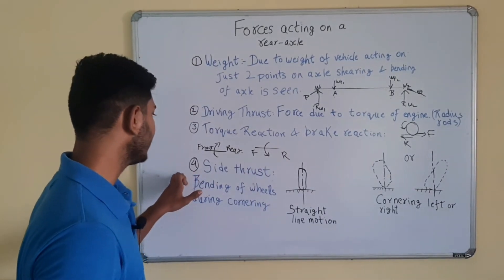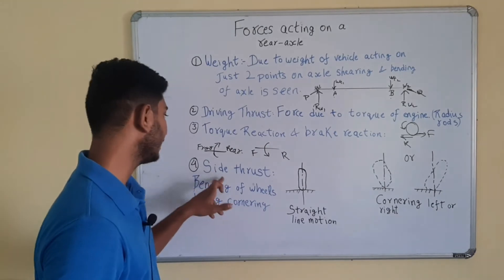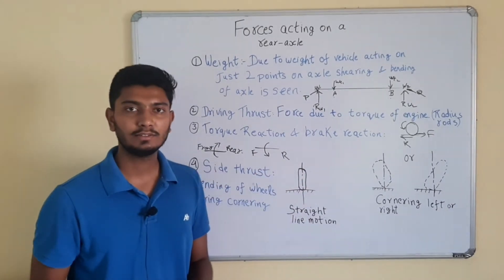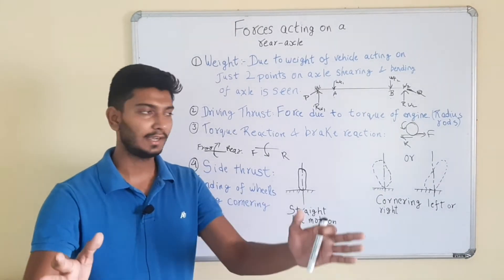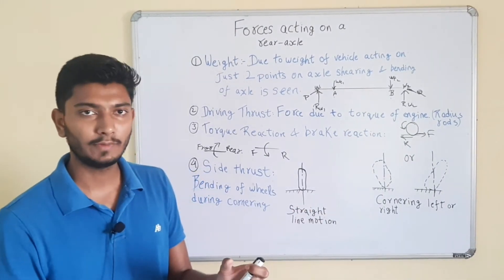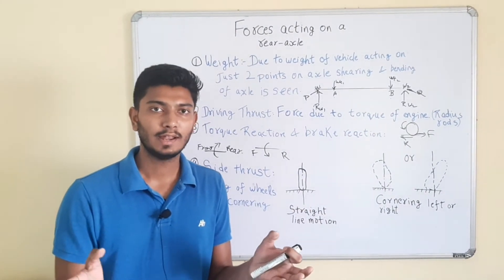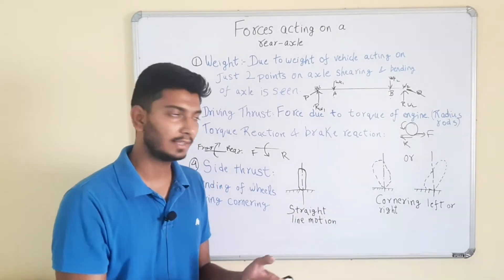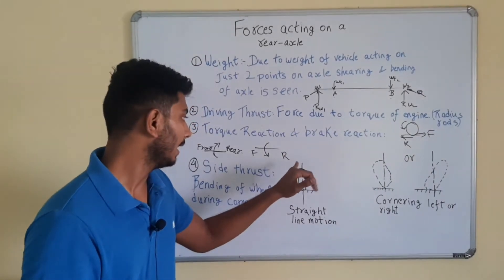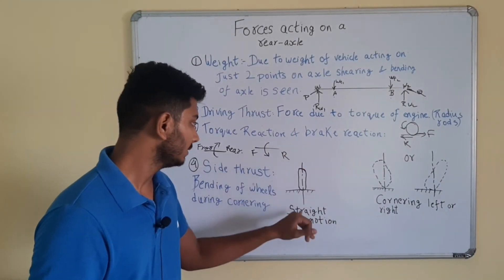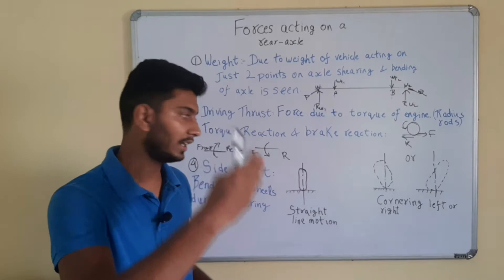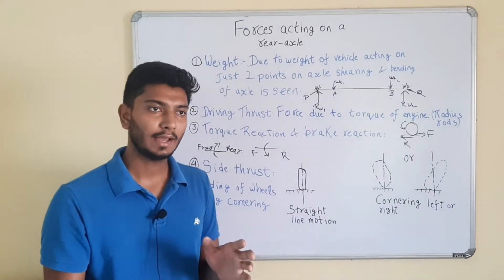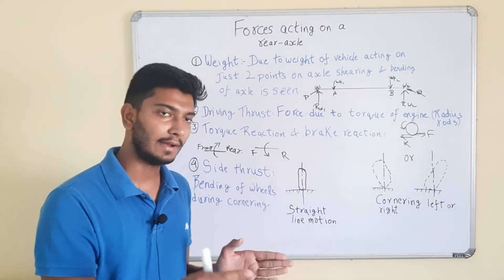And the last force is the side thrust. Now what is side thrust? Let us assume that the vehicle is running in a straight line. So all the four wheels are at just the camber angle which we have set. Let us assume that there is no camber angle or caster angle. It is in a straight form.